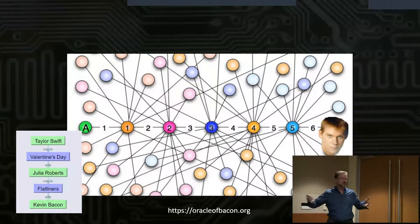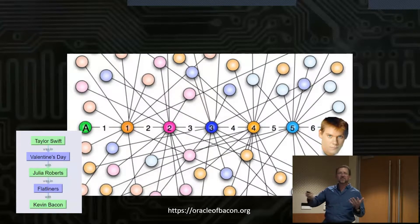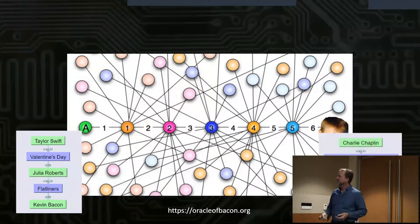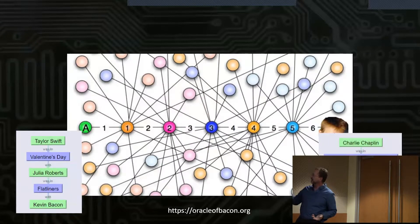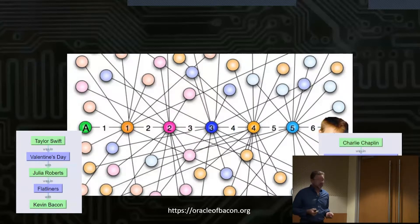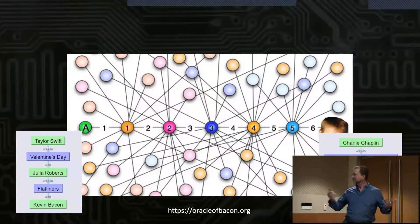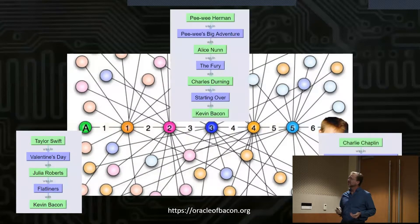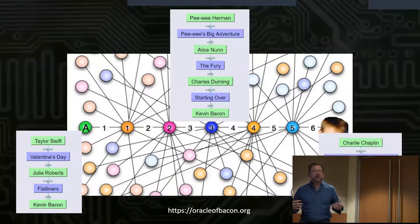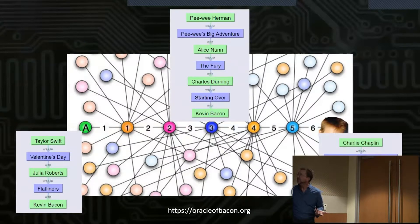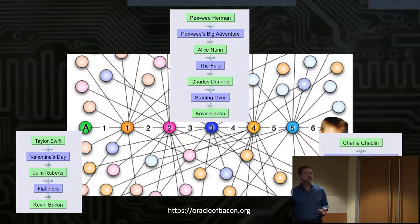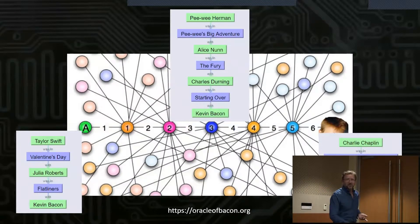You might say, well, that's not a big deal — Taylor Swift's a contemporary musician, no wonder she'd be close to Kevin Bacon. So let's try Charlie Chaplin. Charlie Chaplin was in A Countess from Hong Kong with Tippi Hedren, who was in Jayne Mansfield's Car with Kevin Bacon. One more: Pee-Wee Herman was in Pee-Wee's Big Adventure with Alice Nunn, who was in The Fury with Charles Durning, who was in Starting Over with Kevin Bacon.